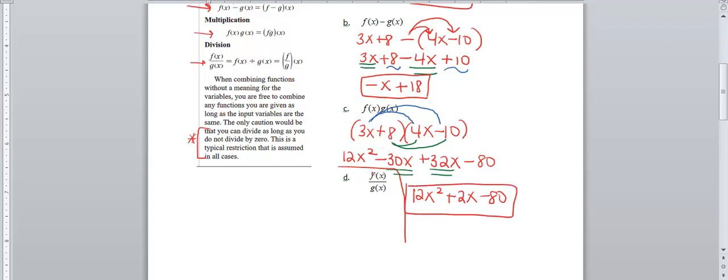And last but certainly not least, we have f(x) over g(x). And all you have to do is just write out your functions. So this will be 3x plus 8 over 4x minus 10. And that is your answer. Now this is actually called a rational function. And we'll deal with those later on in the semester. So that way we know we can't divide by zero. So we can figure out what value of x will do that, et cetera, et cetera.